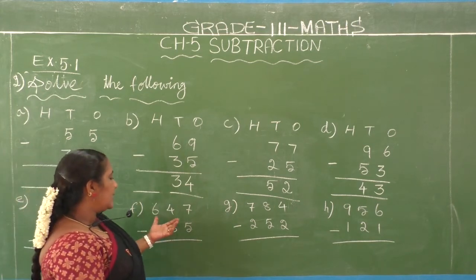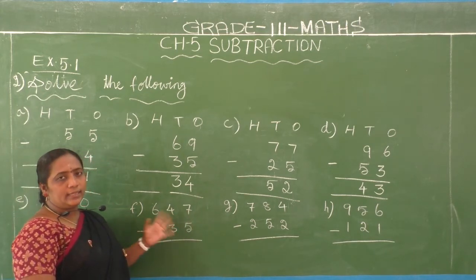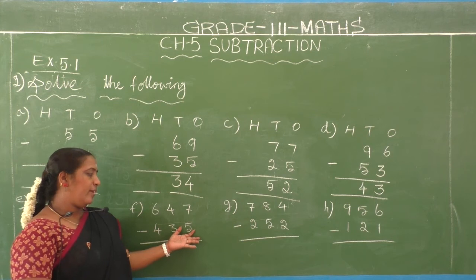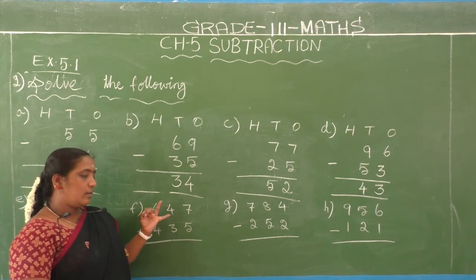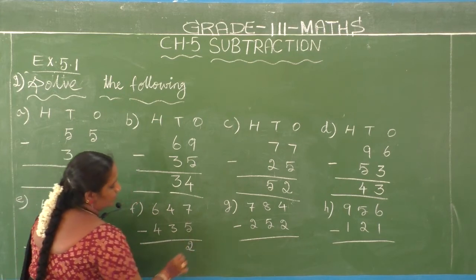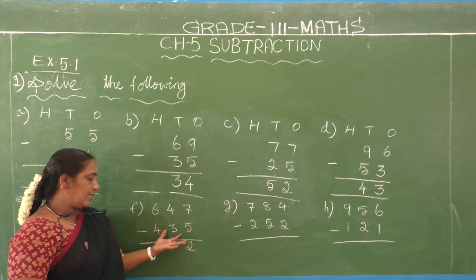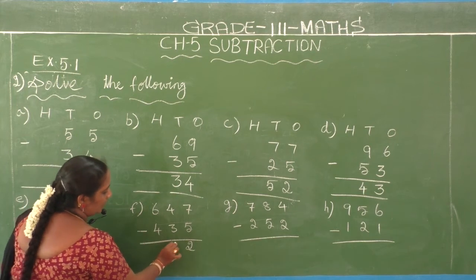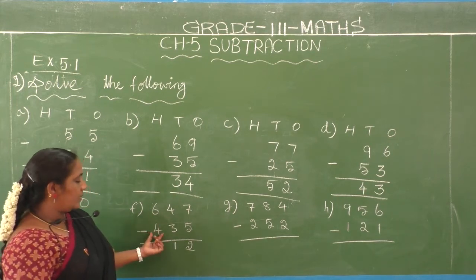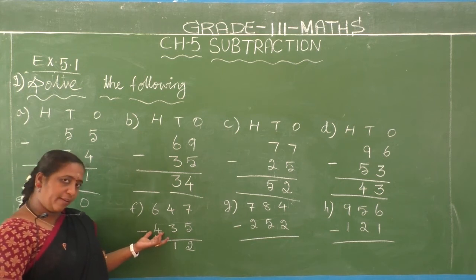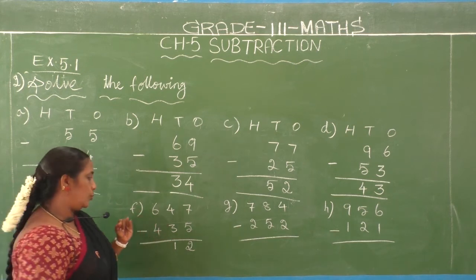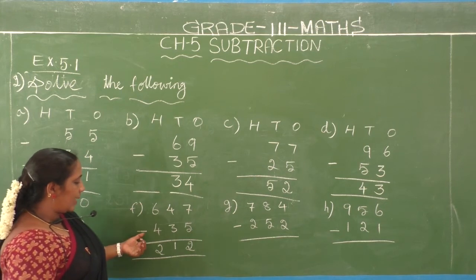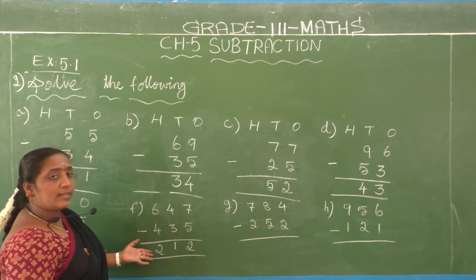F1: 647 minus 435. Ones place — second number is 5, first number is 7: 5 after 6, 7. Difference is 2. Tens place — second number is 3, first number is 4: 3 after 4. Difference is 1. Hundreds place — second number is 4, first number is 6: 4 after 5, 6. Difference is 2. So 647 minus 435 equals 212.